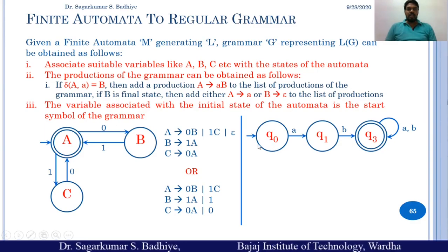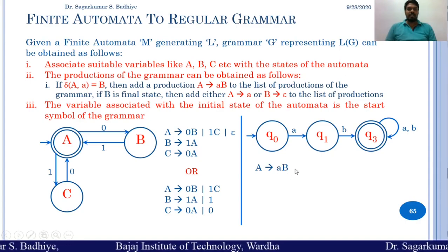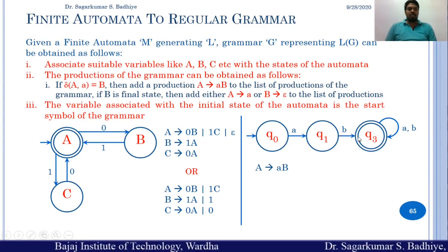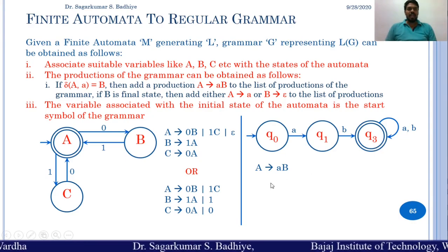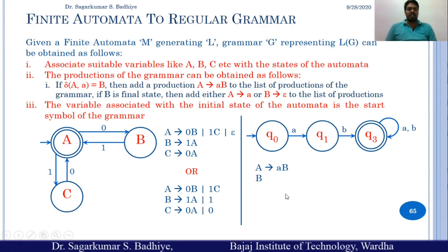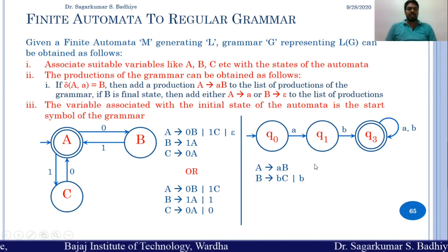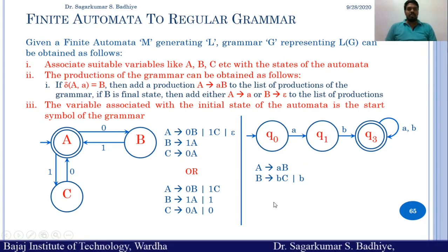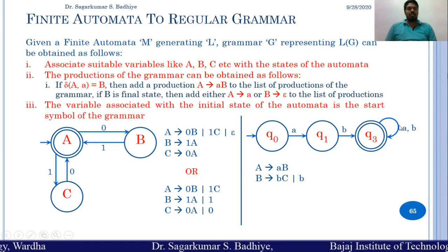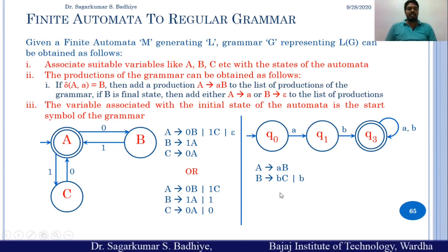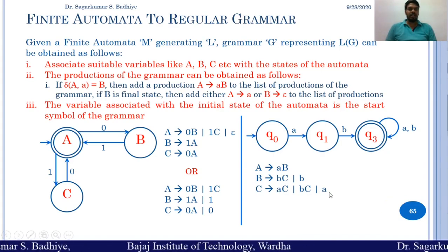We write a rule: A on a goes to B, so we add a production A derives to aB. Similarly, B on b goes to C, so we add a rule B derives to bC. Since C is a final state, we also add B derives to b. Next, C on a or b goes to C, which is also a final state, so we add C derives to aC | bC | a | b.